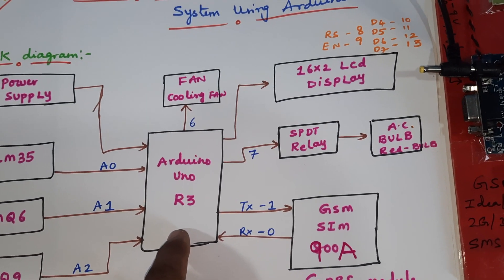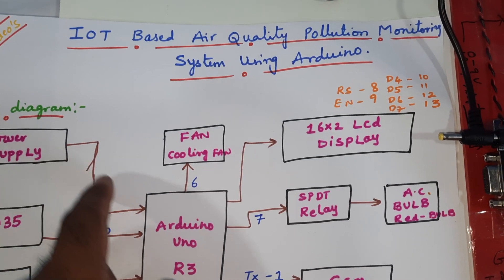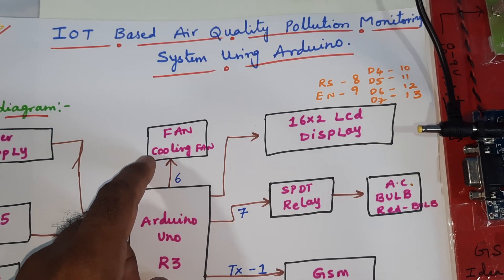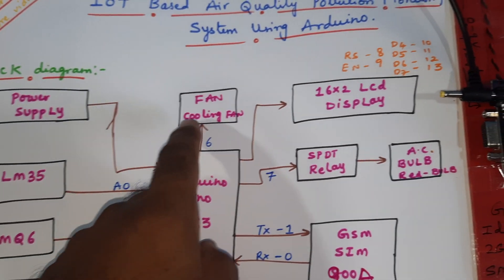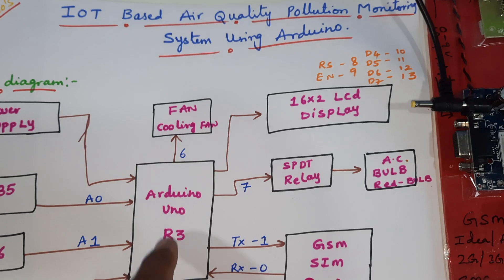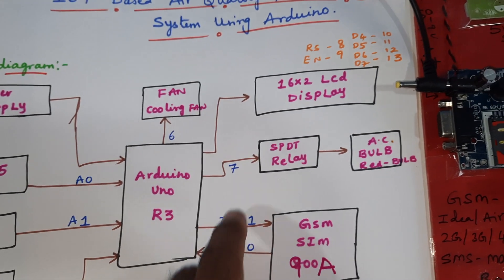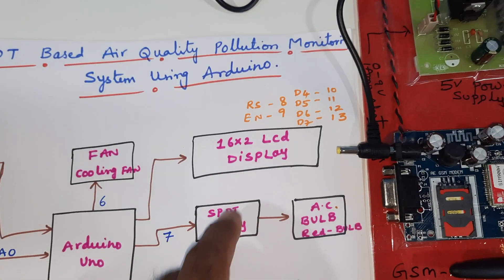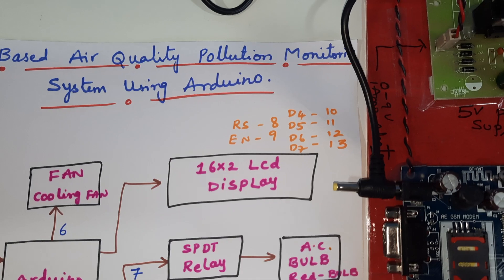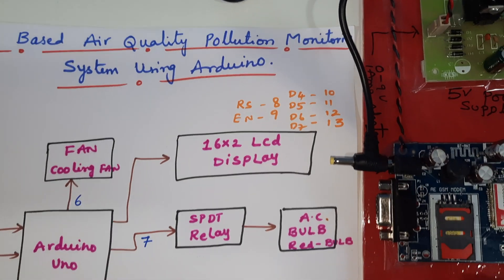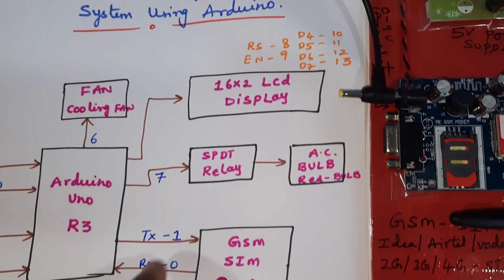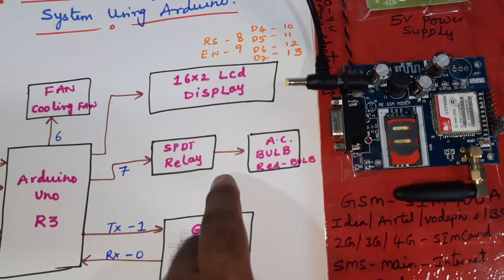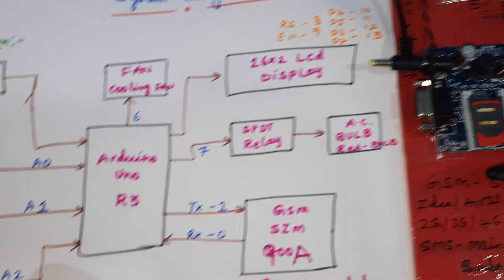The sensors are connected to the Arduino Uno R3 with a 5-volt power supply module and a cooling fan. Depending on the temperature, the fan will be controlled. There is also a 16x2 LCD display connected via RS, Enable, D4, D5, D6, D7 on pins 8 through 13, and an SPDT relay — single pole double throw — along with one AC bulb indicator.